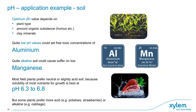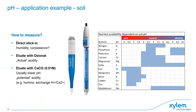For soil pH measurement, there are different approaches. Direct stick-in measurement carries risks: is there enough humidity, and if the soil is rough sand or contains stones, the electrode can be scratched or broken. In that case, choose the least expensive electrode as it will probably not last long. A better option is to perform an elution: dissolve all pH-influencing ingredients and measure in the aqueous phase. There are several standard instructions for elutions — normally 24 hours soaking — and there are differences depending on whether you add calcium chloride, which affects the results for specific reasons.